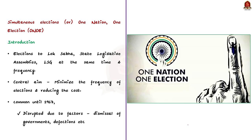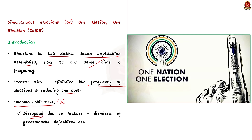Let us start with the introduction. Simultaneous election is the idea of holding elections to Lok Sabha and state legislative assemblies at the same time — that is, once in five years. The central aim is to minimize the frequency of elections and reduce the cost of it. The practice of simultaneous elections is not a new phenomenon; in fact, it was common until 1967. Since then, it was disrupted due to various factors like dismissal of elections, defections, etc. A high-level committee headed by former President Ramnath Kovind has been appointed to enquire about it.